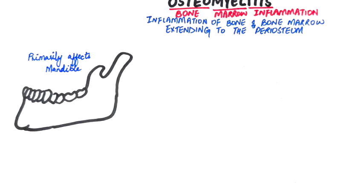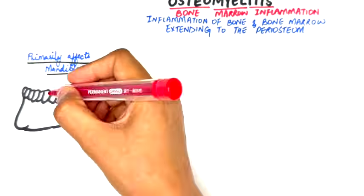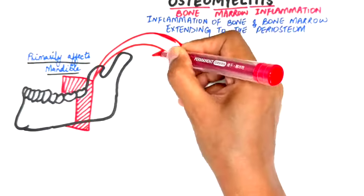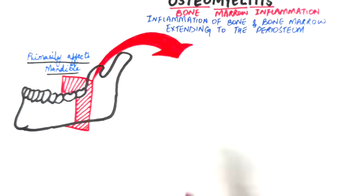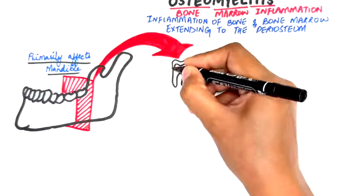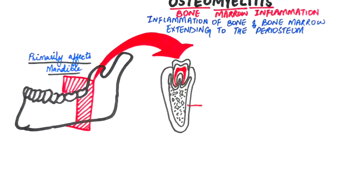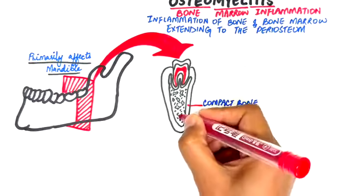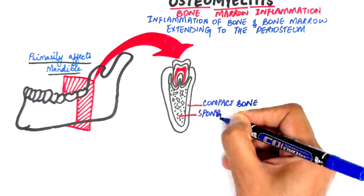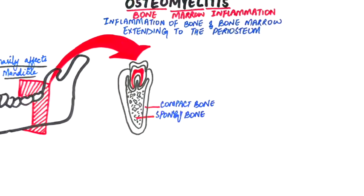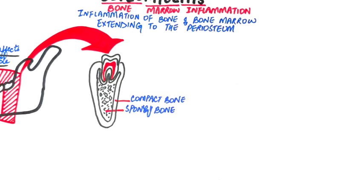To better understand osteomyelitis, it's crucial to first look at the basic structure of the bone. Just like all other bones, when examining a cross-section of the mandible, the mandible comprises outer layers of compact bone that encase the inner trabecular, cancellous, or spongy bone — while all three names refer to the same tissue.